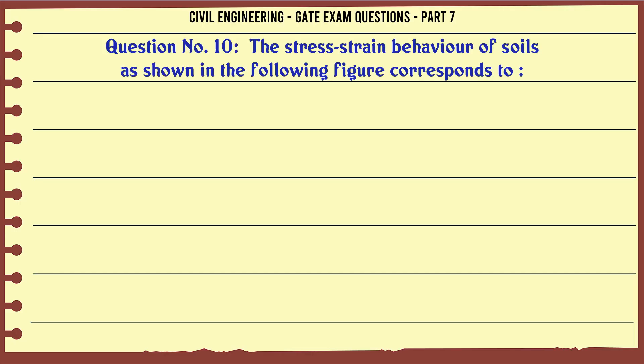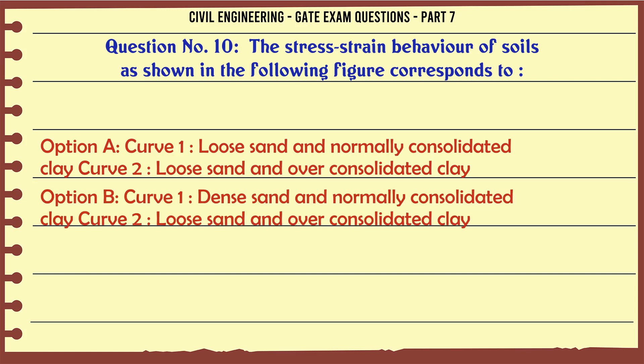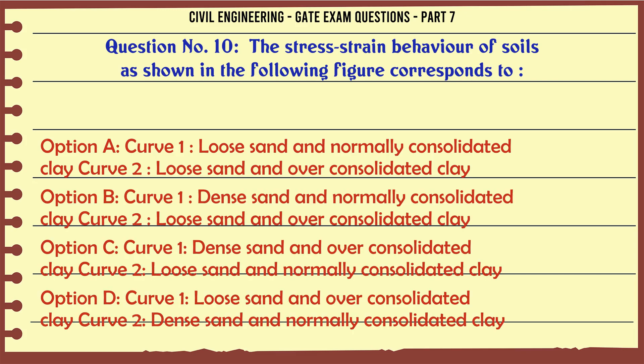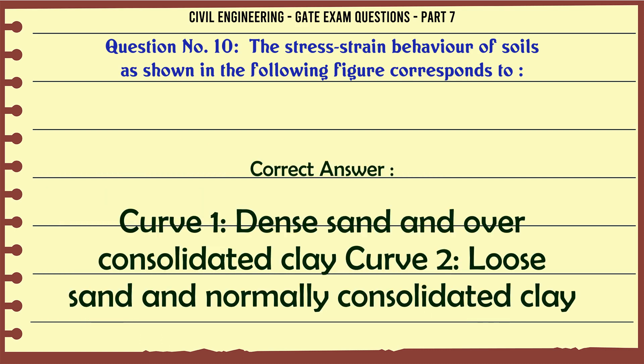The stress-strain behavior of soils as shown in the figure: Curve 1 corresponds to loose sand and normally consolidated clay; Curve 2 corresponds to dense sand and over-consolidated clay. The correct answer is: Curve 1 — dense sand and over-consolidated clay; Curve 2 — loose sand and normally consolidated clay.